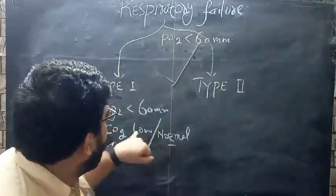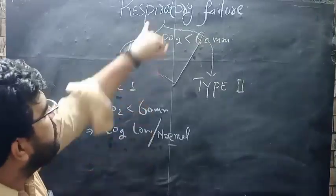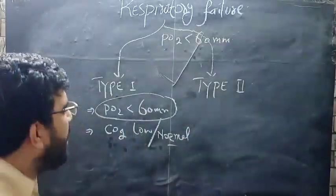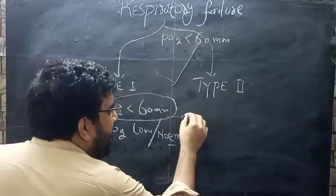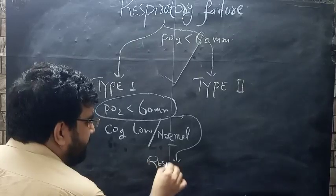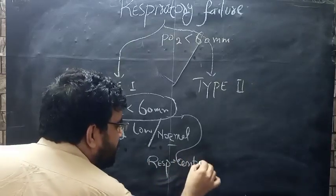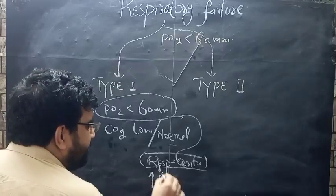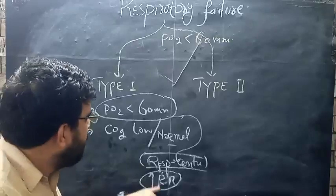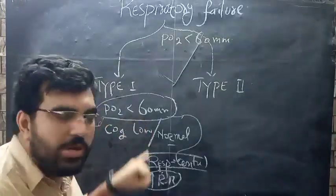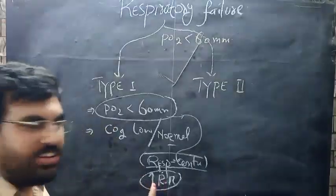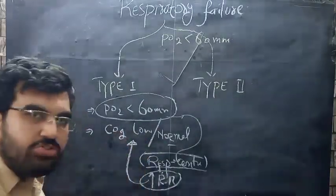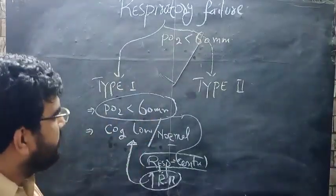The CO2 being normal is understandable, but how can CO2 be low in Type 1 respiratory failure? If the patient is having hypoxia, it will act on the respiratory center to increase oxygen concentration, which increases the respiratory rate. When the respiratory rate increases, CO2 is washed out — that is the reason for the low CO2 in Type 1 respiratory failure.